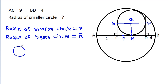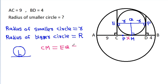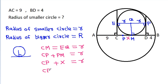In any circle, the radius and tangent are perpendicular to each other, so these angles will be 90 degrees. QE will be small r, QF will be small r, and suppose PM is X. Then CM will be equal to EQ, that is small r, and CM is CP plus PM, which is X. So CP will be equal to small r minus X.